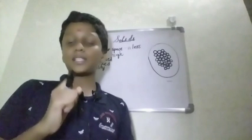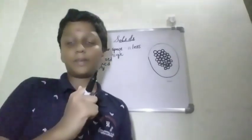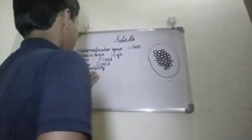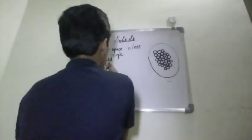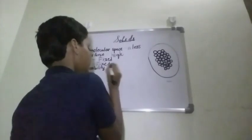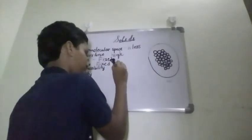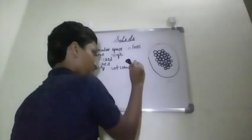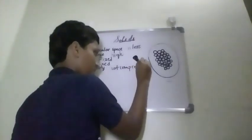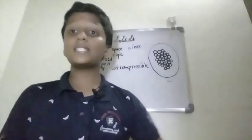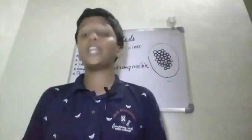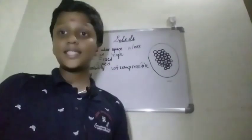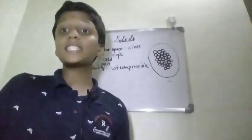So solids have a fixed volume. Next, compressibility — can we compress solids into a lesser volume? We cannot. We cannot compress solids. That is why the compressibility of solids is: not compressible. And next, fluidity — does a solid flow? No.